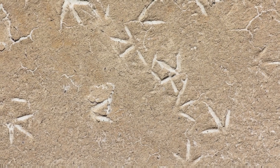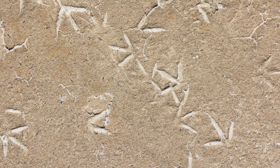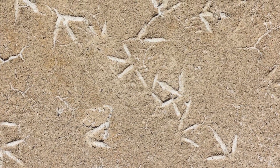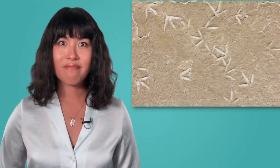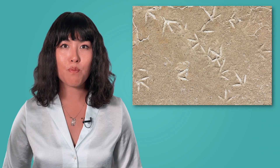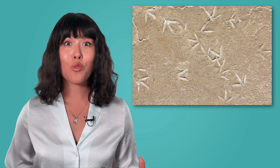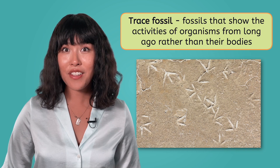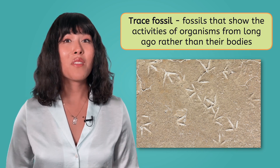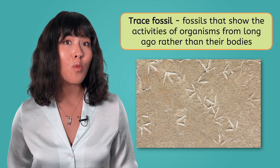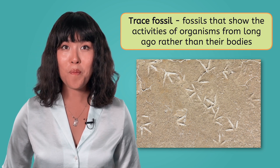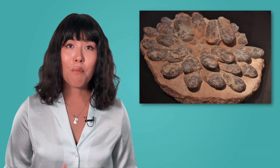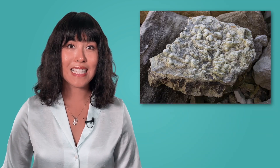But wait — check this out. We unearthed another fossil nearby, but it's a bit different. Does this look like a body fossil to you? This isn't a fossilized part of the organism's body — it must be a trace fossil instead. Trace fossils are fossils that show the activities of organisms from long ago, rather than their actual bodies. They form in similar ways to how body fossils form, but instead of an organism's remains, their footprints, nests, burrows, and even droppings become fossilized instead.